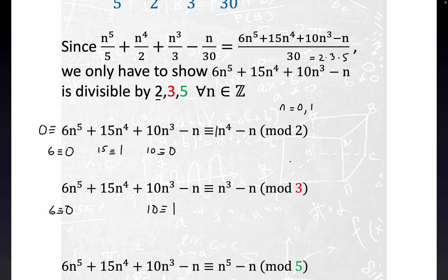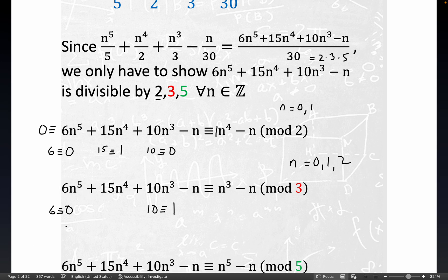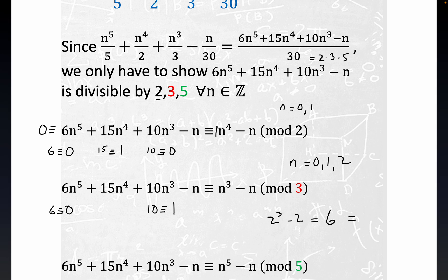But this time we have to check for n equals 0, 1 and 2, which are the possible remainders if you divide any integer by 3. And so 0 and 1 again are 0, but then if you do 2 cubed, 2 cubed minus 2 is equal to 6, but hey, that's congruent to 0. So this expression right here, this simplified expression of the object we're interested in is congruent to 0. So you see, we've checked off on two of them. Now all that remains is just to do 5.